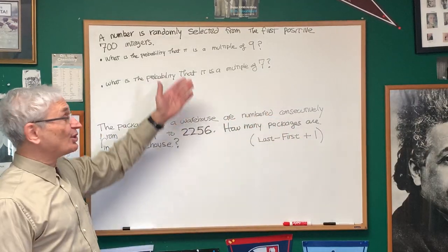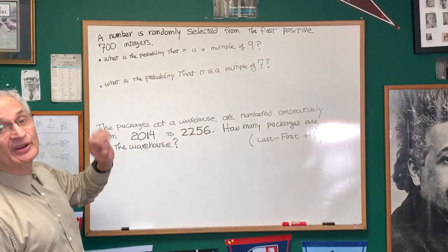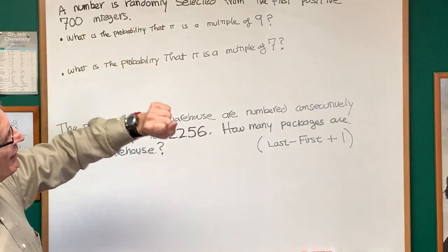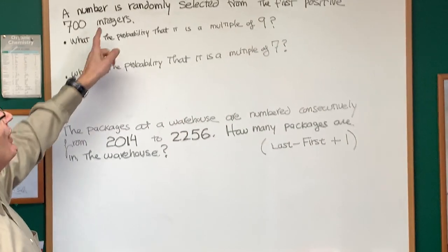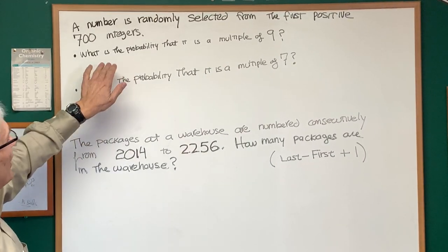Okay, let's take a look at these problems. These three are all related to each other in one way or another. A number is randomly selected from the first positive 700 integers. Okay, question one.